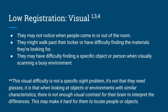Those who fall into the visual low registration quadrant typically won't notice when people come in or out of the room, or they might have a hard time finding something in a busy environment. They might even walk right past something or someone they are looking for, like a person in a crowded room or an art material in a messy drawer. This visual difficulty is not a specific sight problem and it's not that they need glasses. It is that when looking at objects or environments with similar characteristics, there is not enough visual contrast for their brains to interpret the differences, which may make it hard for them to locate people or objects.